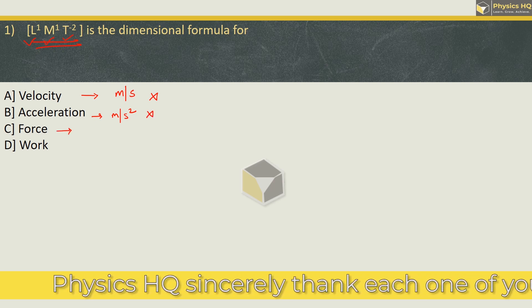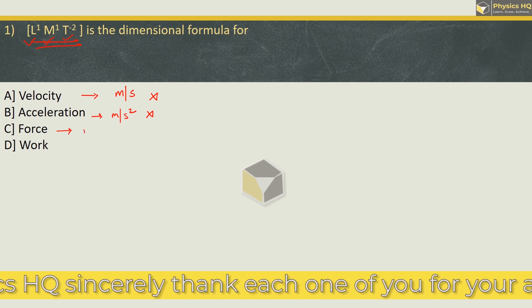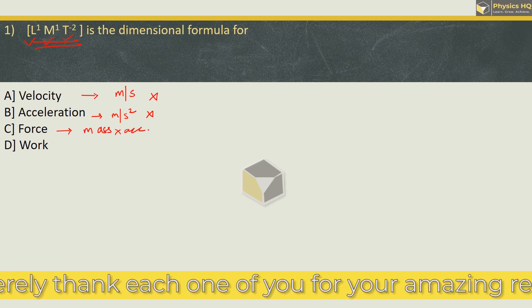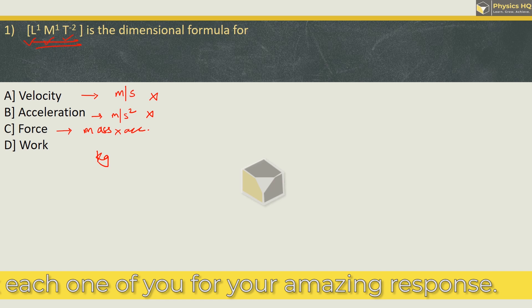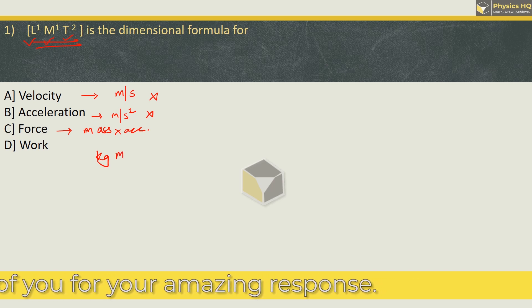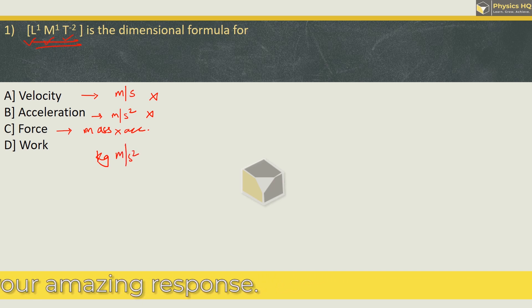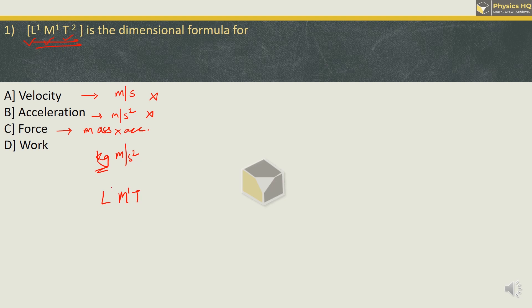Next what we have is force. Now force is also given in the form of mass into acceleration. Now mass is given in kg and acceleration is given in meter per second square. So over here the dimensions will be we got kg that will give M¹. We got meter over here so we got L¹. There is second square, the power is 2 but it is in denominator so we will write it as minus 2. So we got the option as option C.